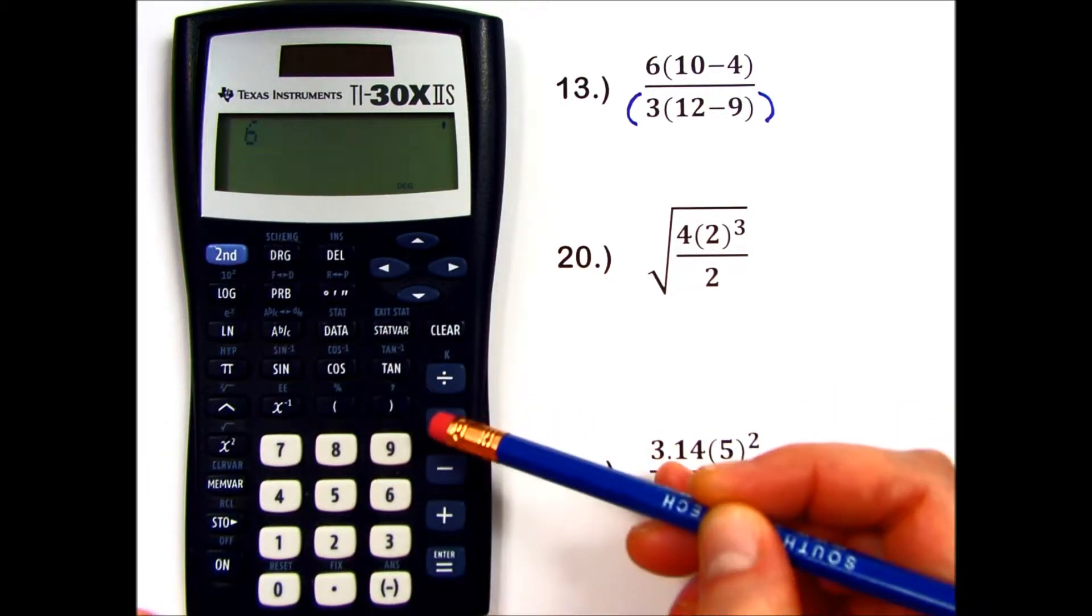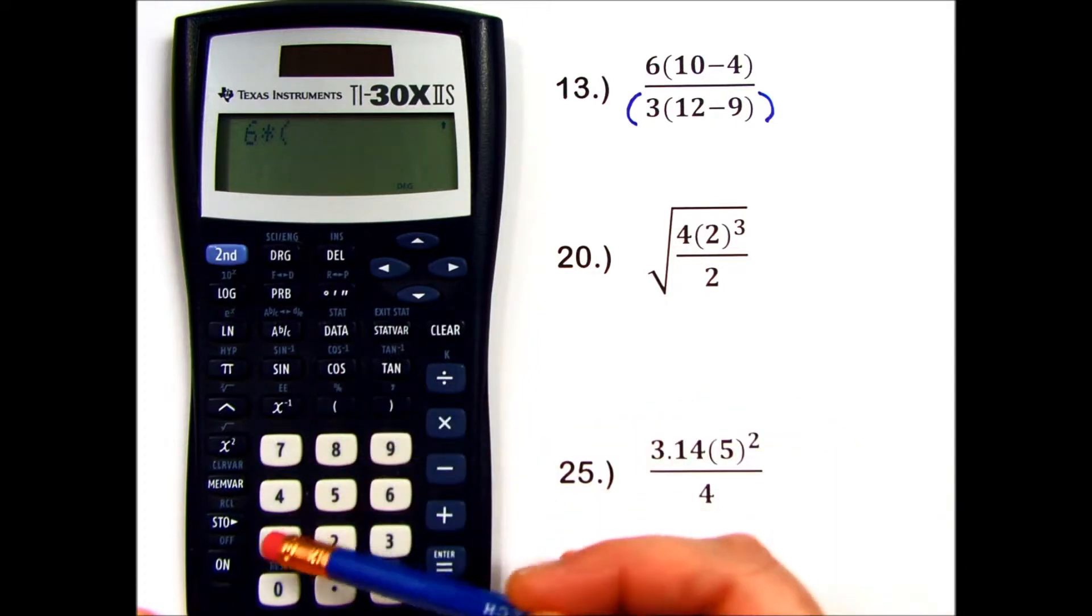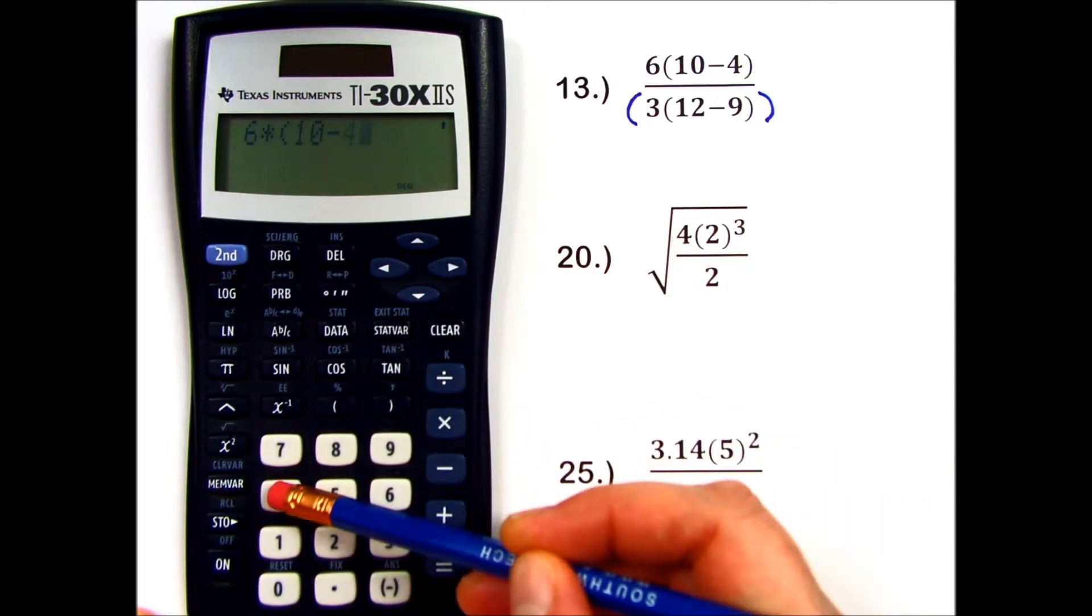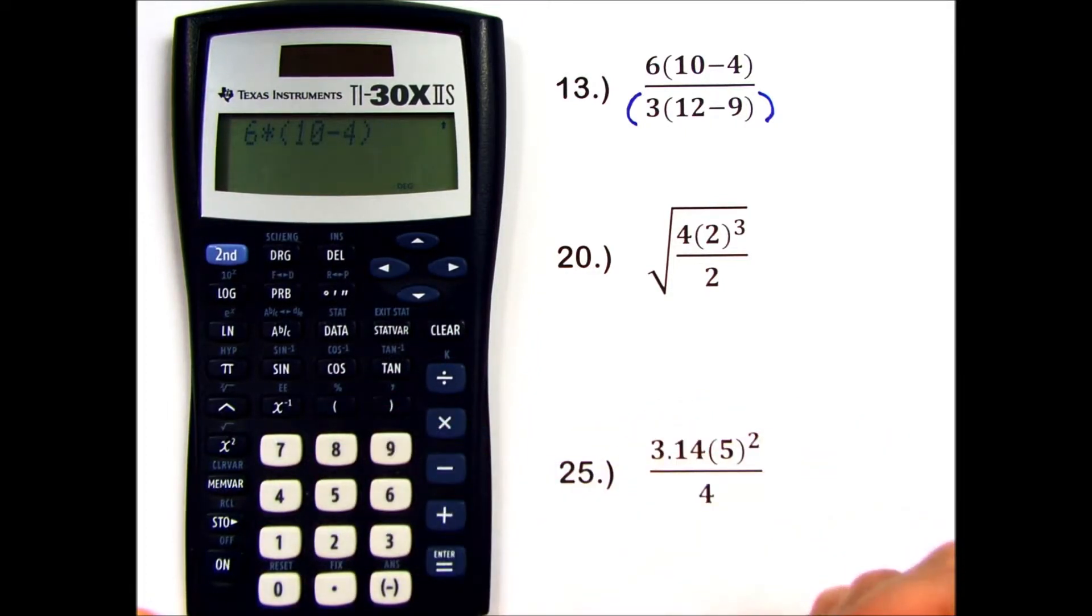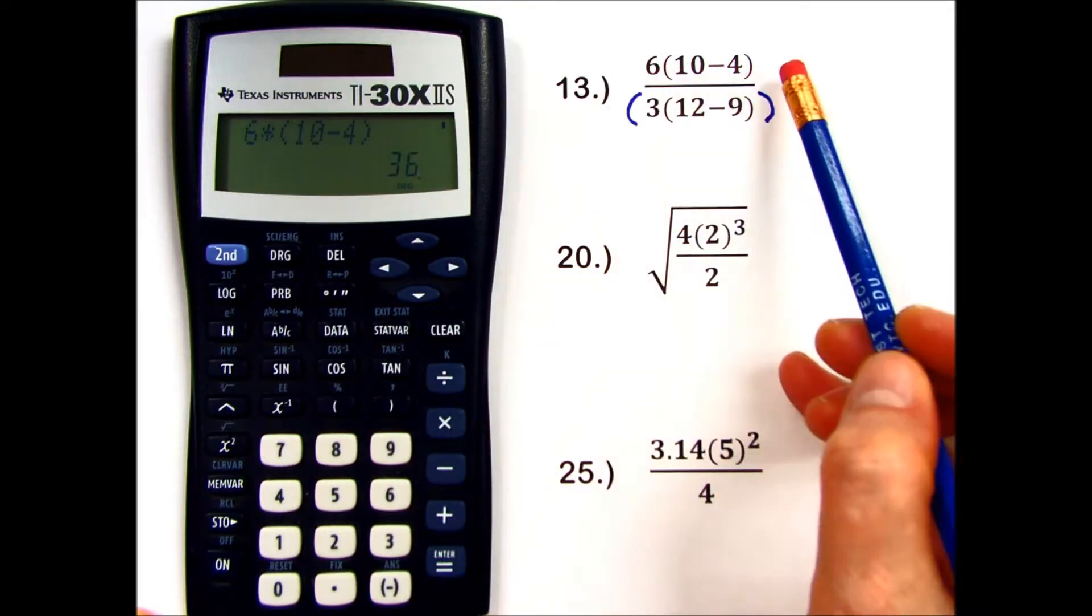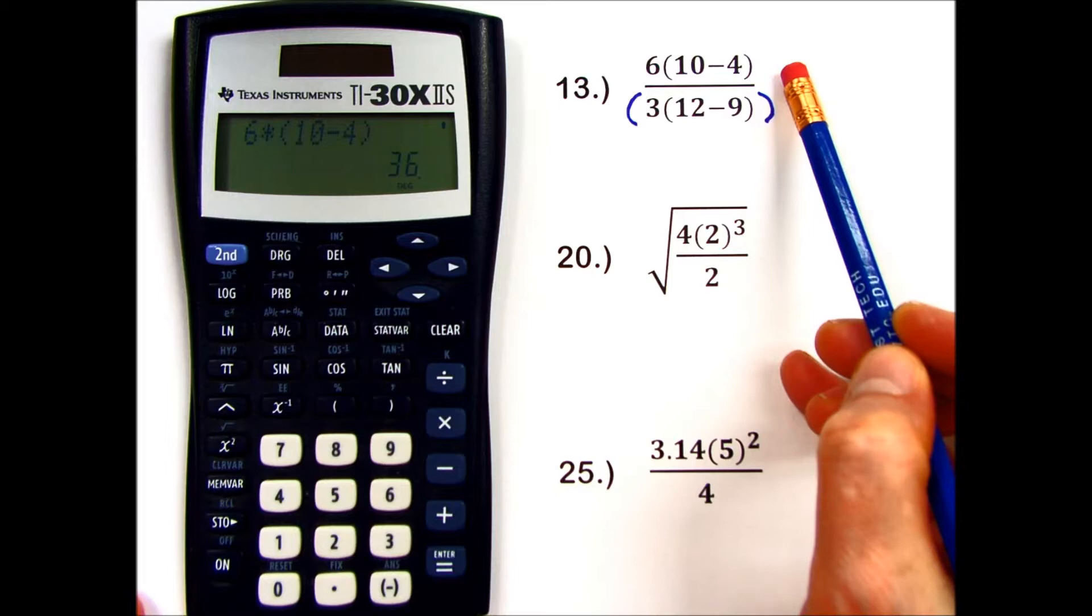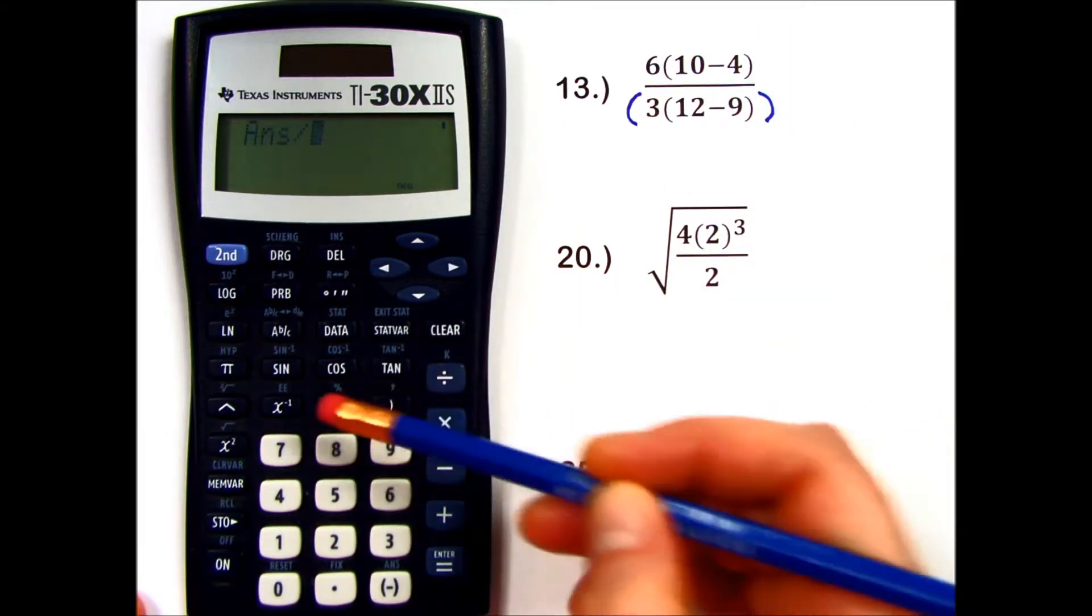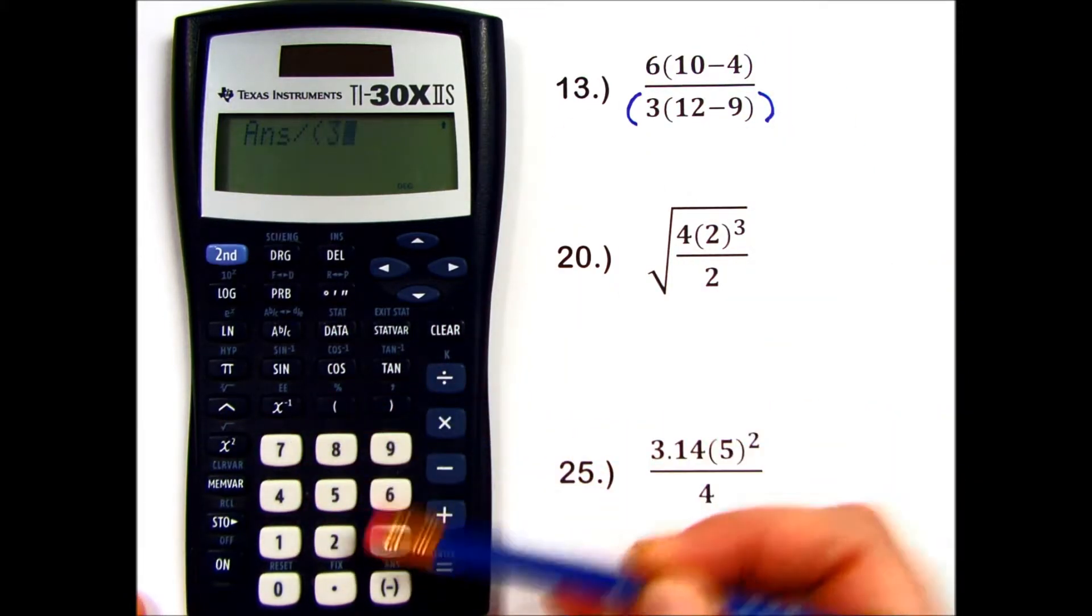6 times parentheses 10 minus 4, close the parentheses. If I press equals here, I see my value of my entire numerator. Now I will divide parentheses 3 times,